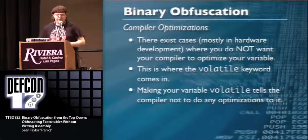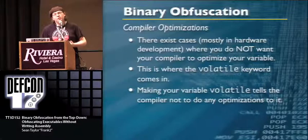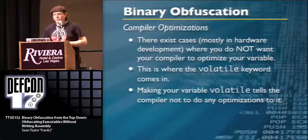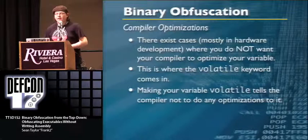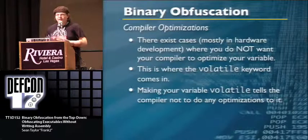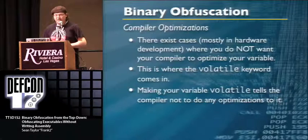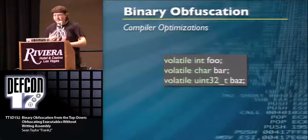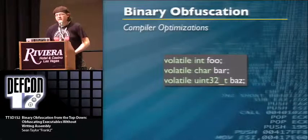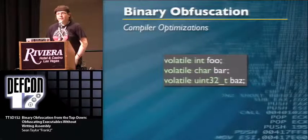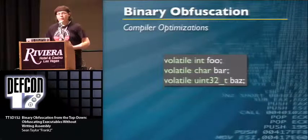There are times you don't want optimizations to happen — for legitimate purposes. In hardware development, you have variables you don't want optimized away. The volatile keyword essentially says: 'This is my variable, not yours. Please do not touch it — you do not know what you will wreak.' You cast it just like the unsigned statement in C/C++: volatile int, char, UINT32, or any custom struct type.